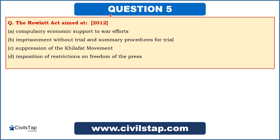This question came in the prelims of 2012: 'The Rowlett Act aimed at...' Options are: compulsory economic support to war efforts; imprisonment without trial and summary procedures for trial; suppression of the Khilafat Movement; and imposition of restrictions on freedom of press. We have read about the Rowlett Act — it had a provision of imprisonment without trial for up to 2 years. So option B is the answer.